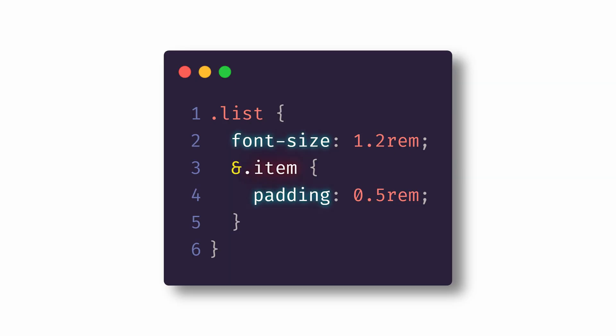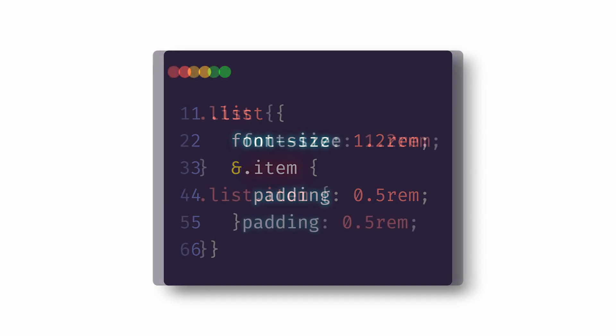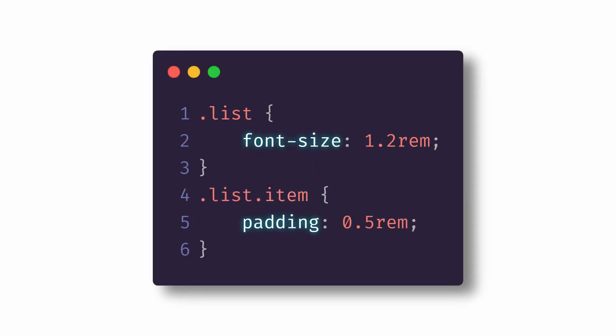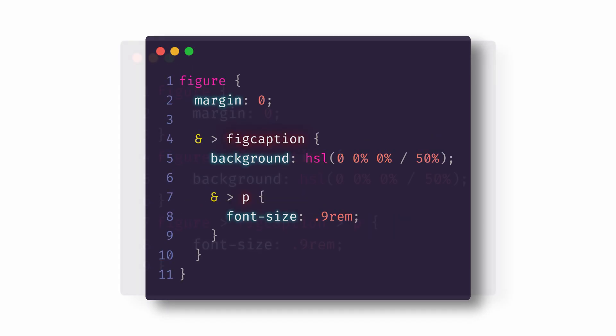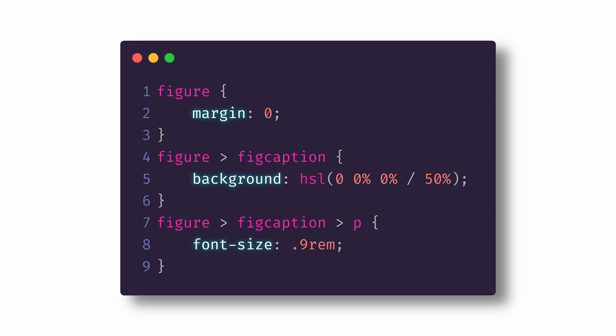Now, just like in Sass, the ampersand is used to reference the parent selector. In this example we're applying a font size to the list, then referencing the list item using ampersand to apply the padding. Here's what that would look like in regular CSS. We can even nest multiple levels deep, and here's what that would look like in regular CSS.